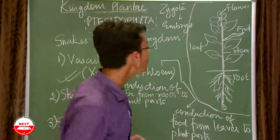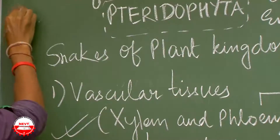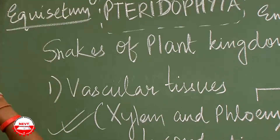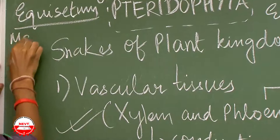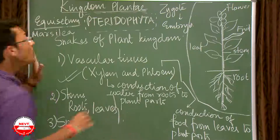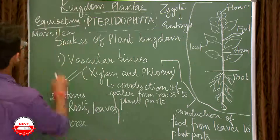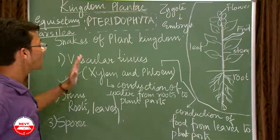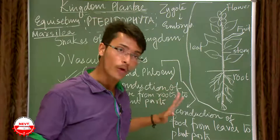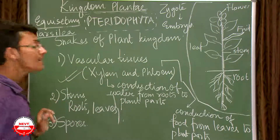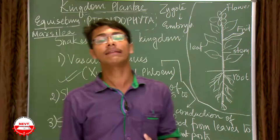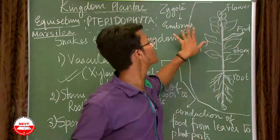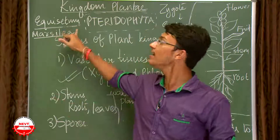The examples under Pteridophyta to remember are Equisetum and Marsilea. To summarize pteridophyta: vascular tissues (xylem and phloem) are present for the first time in the plant kingdom; true roots, stems, and leaves are present; and reproduction is by means of spores, which are naked embryos.